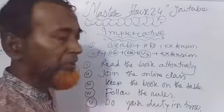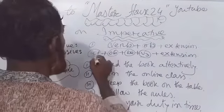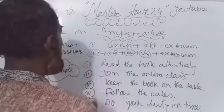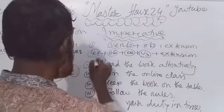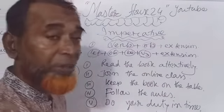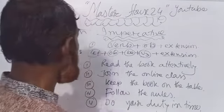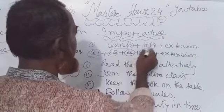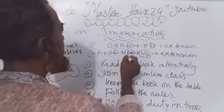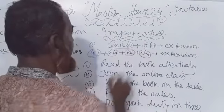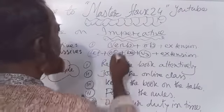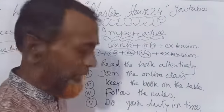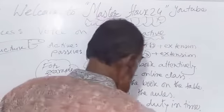Let me repeat again. At the time of making passive voice, at first we should write 'let.' There is no subject, so at the time of making passive voice we write 'let,' then we write the object, and then 'be' plus past participle, and then the extension. I hope you are writing this down.